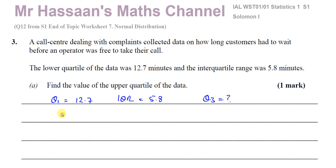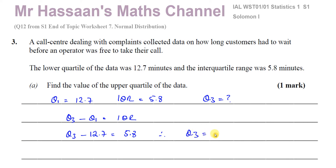It's pretty simple because the difference between the upper quartile and the lower quartile is the interquartile range. So Q3 minus Q1 gives the interquartile range. Therefore Q3 minus 12.7 equals 5.8, so Q3 is 5.8 plus 12.7, which gives us 18.5 minutes. That's Q3.